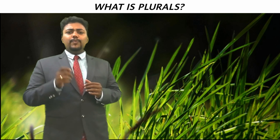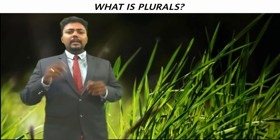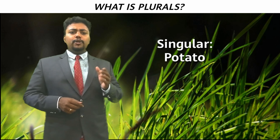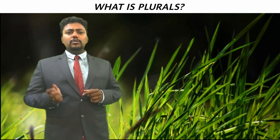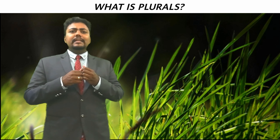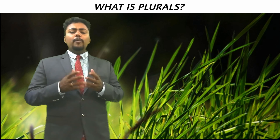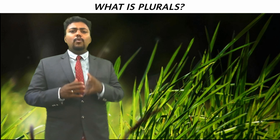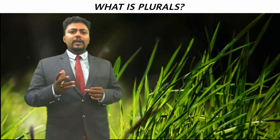For some words that end with 'o', add 'es' at the end of the word. Singular and plural examples: potato becomes potatoes, echo becomes echoes. These are some of the different kinds of plurals.